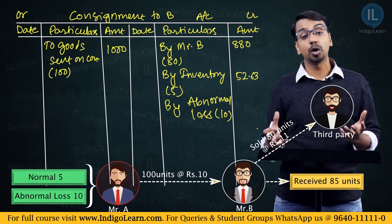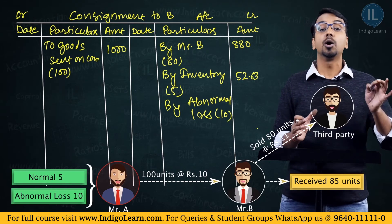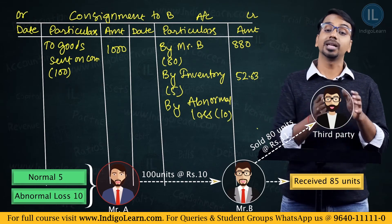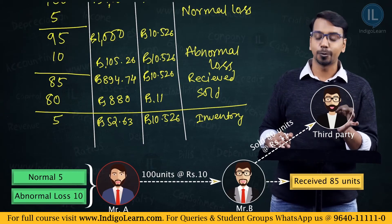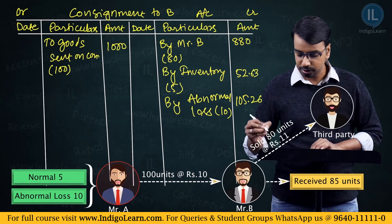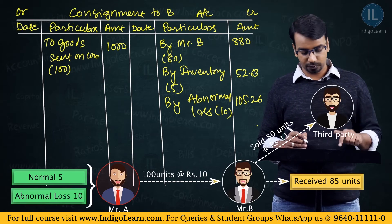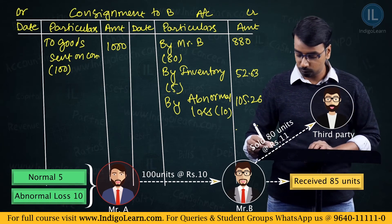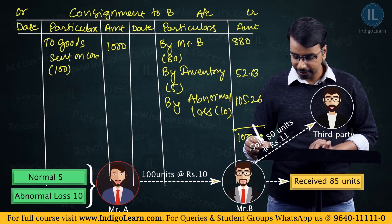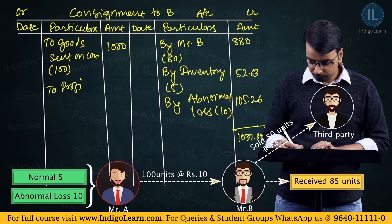So in the consignment account: credit side totals — rupees 880 (sales) + rupees 52.63 (closing inventory) + rupees 105.26 (abnormal loss) = rupees 1037.89. Debit side is rupees 1000. So profit = rupees 1037.89 − rupees 1000 = rupees 37.89, which is transferred to the profit and loss account.